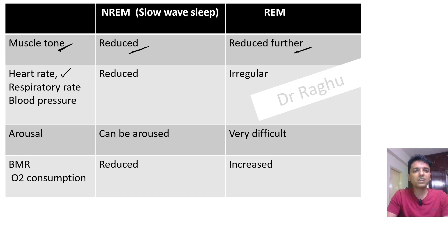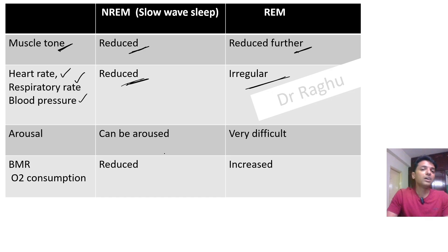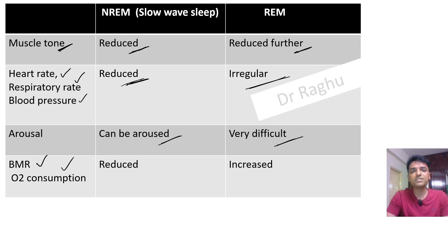Heart rate, respiratory rate, and blood pressure are all reduced in NREM sleep. In REM sleep they become irregular. In NREM sleep the person can be aroused, whereas in REM sleep arousal becomes very difficult. BMR and oxygen consumption are also reduced in NREM sleep, whereas basal metabolic rate and oxygen consumption are increased in REM sleep.